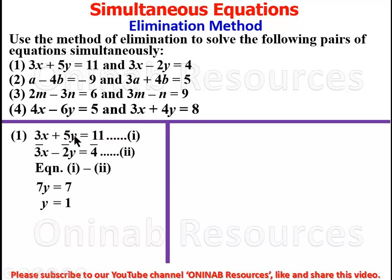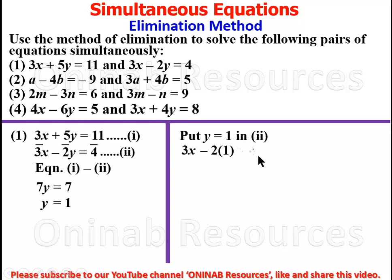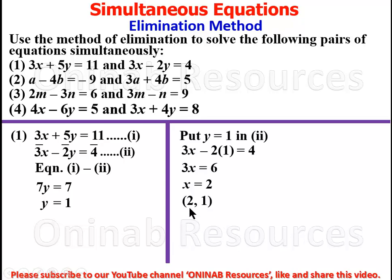Dividing both sides by the coefficient of y, which is 7, we have y equal to 1. Now we substitute y equal to 1 in equation 2. So we have 3x minus 2 times 1 equal to 4. Negative 2 times 1 gives negative 2; moving it to the other side it becomes positive 2. So 3x equals 6, and dividing both sides by 3, x is equal to 2.